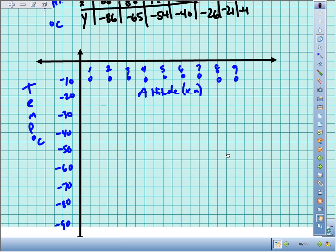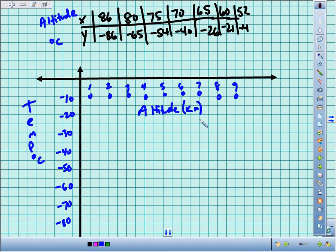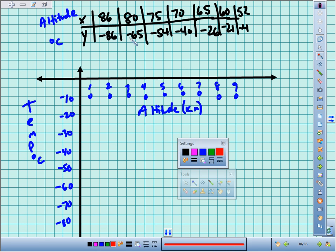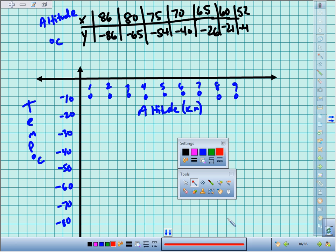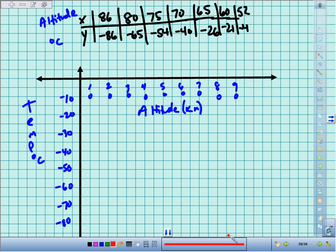Okay, now we just need to plot the points. Take a second to do those. 86, negative 86: there's 85, there's negative 85, right about there. 80, negative 65: that should be easily found, over 80, there's 65. 75, negative 54: there's negative 50, 54 is going to be about right there.